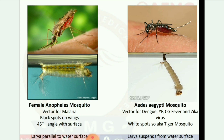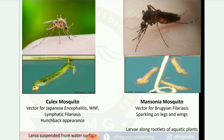Next image: Aedes aegypti mosquito — vector for dengue, yellow fever, chikungunya fever, and Zika fever. Has white spots, also known as the tiger mosquito. Larvae suspend from the water surface.